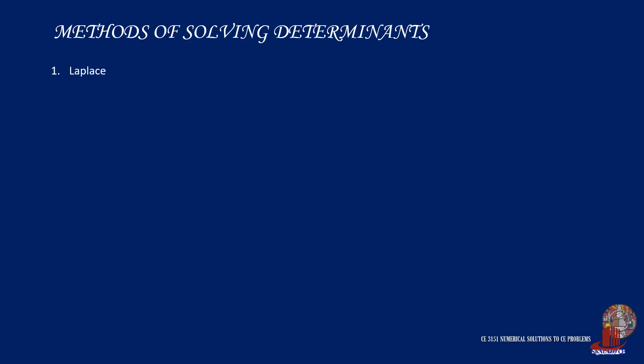From this video, we discussed the most common methods for solving the determinant of a matrix: Laplace expansion, the butterfly method, and the Cyrus method. Converting to row echelon form is also a method to simplify the matrix and obtain the determinant easily. Other methods include Chió's pivotal condensation method and Chibami's method, both used for bigger matrices.